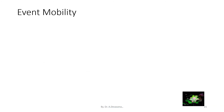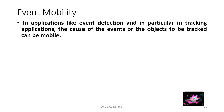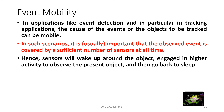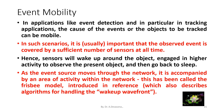Event mobility: in applications like event detection, and in particular in tracking applications, the cause of the events or the objects to be tracked can be mobile. In such scenarios, it is important that the observed event is covered by a sufficient number of sensors at all times. Hence, sensors will wake up around the object to observe it and then go back to sleep. As the event source moves through the network, it is accompanied by an area of activity, which has been called the frisbee model, also describing algorithms for handling the wake-up wavefront.